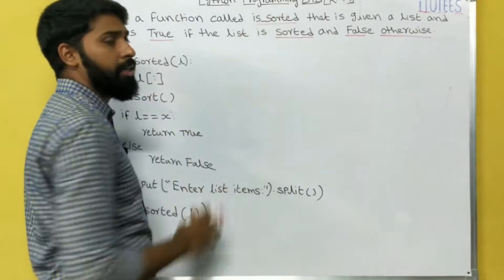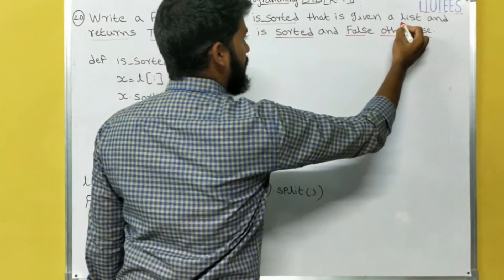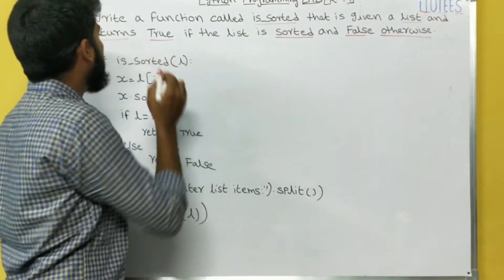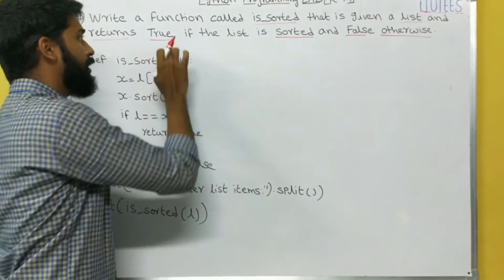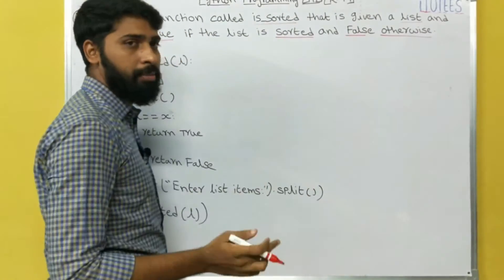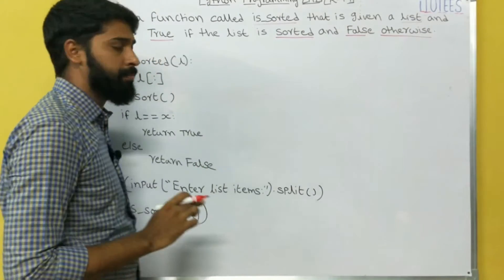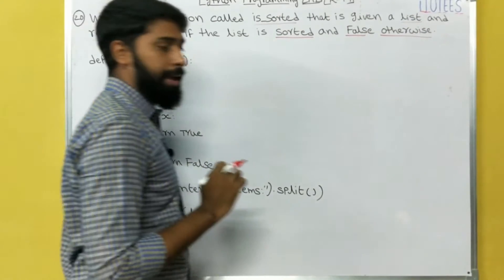So what is the function name? isSorted. It takes a list as an input and it returns a value either True or False, based on whether it's sorted.